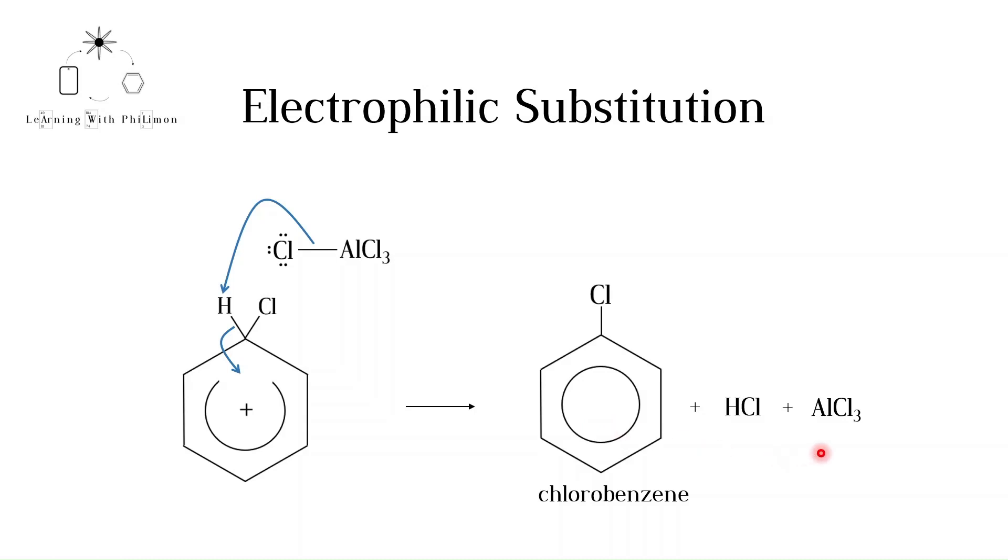Note that AlCl3 is formed and can be used again in the first step. This mechanism is called electrophilic, due to the attraction of the electrons in the benzene ring to electrophiles. The mechanism is called substitution, because a hydrogen atom is replaced by a chlorine atom.